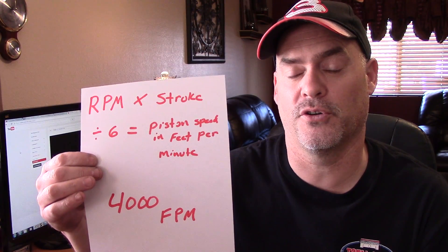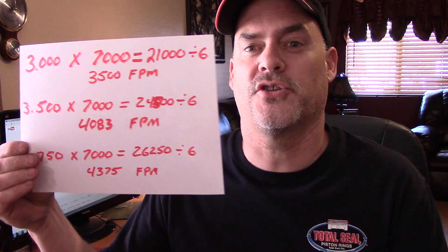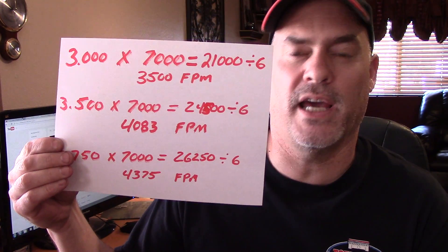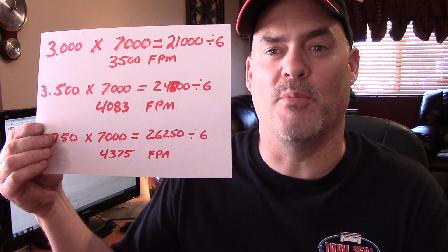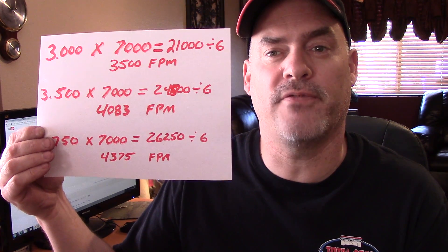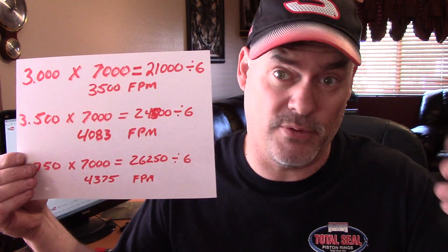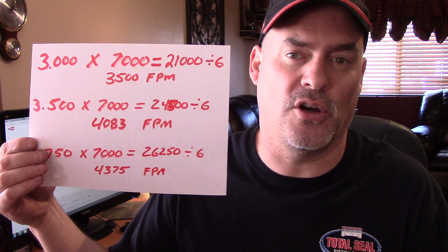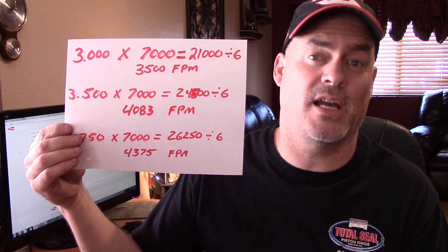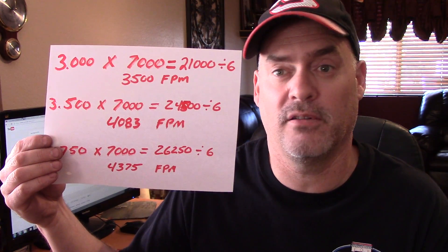If we plug some numbers into this equation, let's say a 3-inch stroke: 3 times 7,000 equals 21,000, divided by 6 gives us 3,500 feet per minute. So at 7,000 RPMs, an engine with a 3-inch stroke — like a 302 Ford — has a piston speed of 3,500 feet per minute. We can see that 7,000 RPMs is actually safe for a 302, as long as the induction system and camshafts will support that RPM, without causing the engine to fly apart.